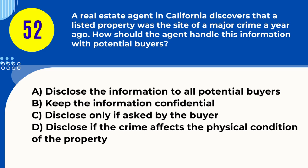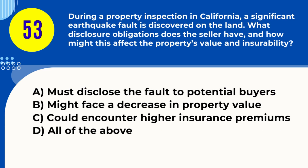Question 52. A real estate agent in California discovers that a listed property was the site of a major crime a year ago. How should the agent handle this information with potential buyers? A. Disclose the information to all potential buyers B. Keep the information confidential C. Disclose only if asked by the buyer D. Disclose if the crime affects the physical condition of the property. Answer: A. Disclose the information to all potential buyers. Explanation: California law requires the disclosure of a major crime on the property to all potential buyers.